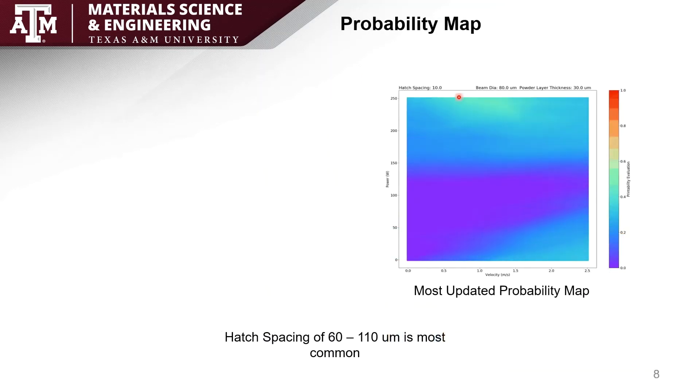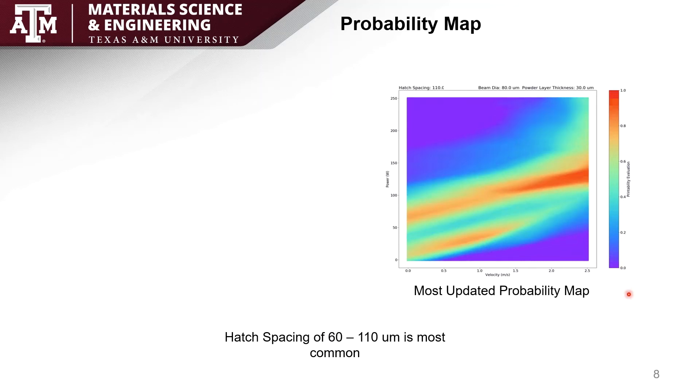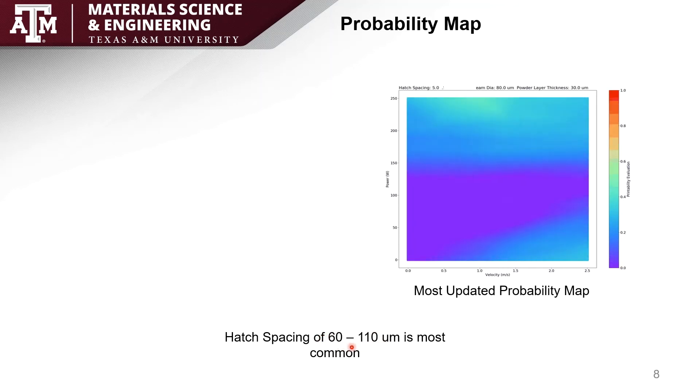This is currently the most up-to-date map that I have. It still uses the 0 to 150 hatch spacing and the red to indicate success and blue to indicate unsuccessful. It is also important to note that the 60 to 110 range is still the most reliable because there hasn't been too much data updated since we created the first map.